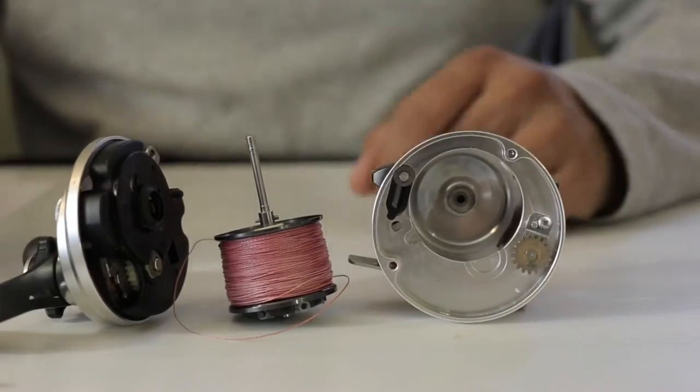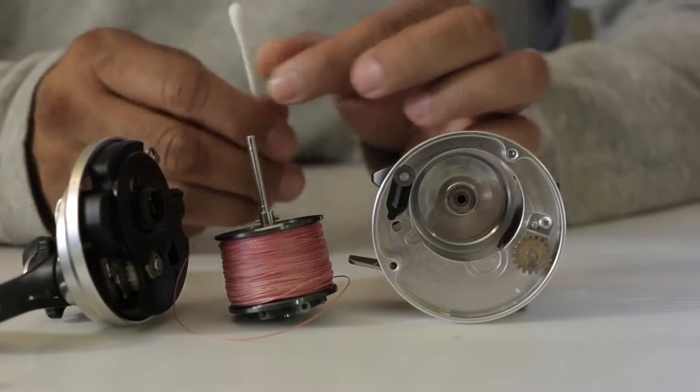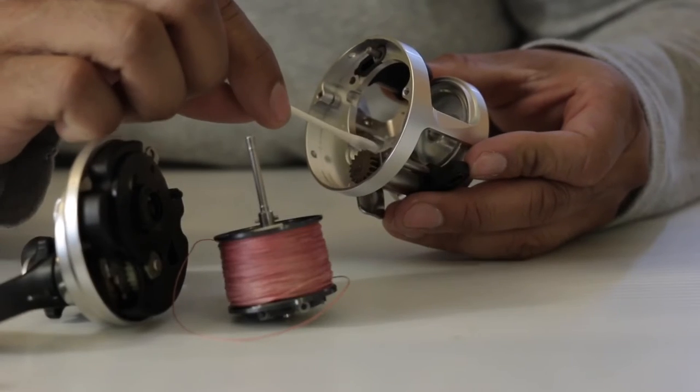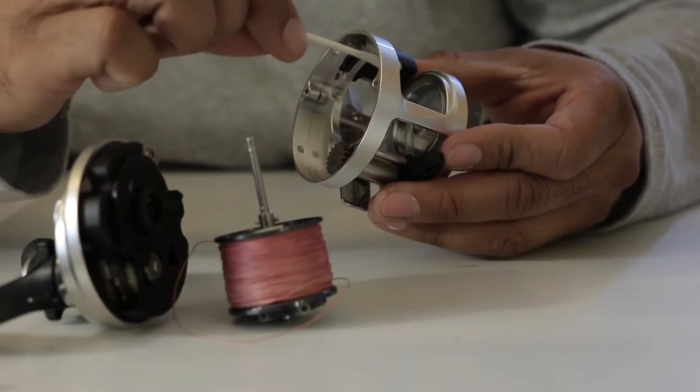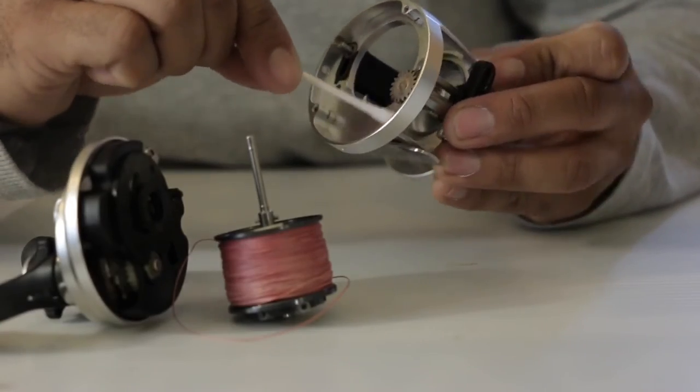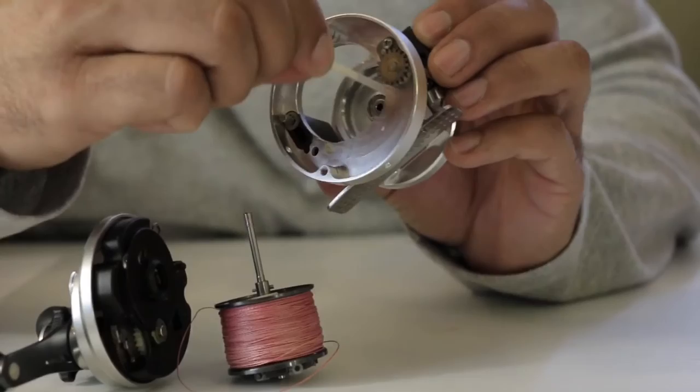Now you have these parts here. And what I do is I get a Q-tip, and I'll clean all of these parts right here, in case there's any dirt or sometimes you get moisture in these parts right here. And then I'm going to clean the inside of this here really nice.